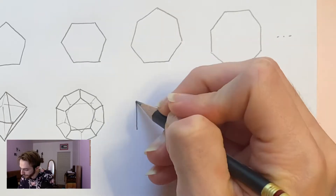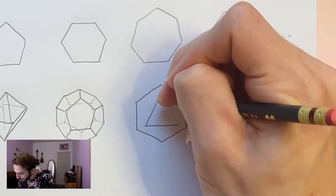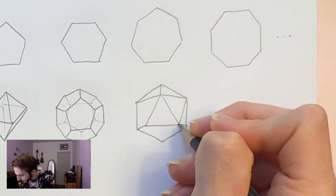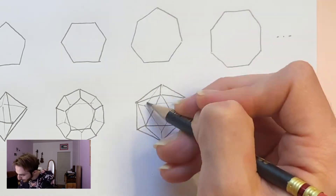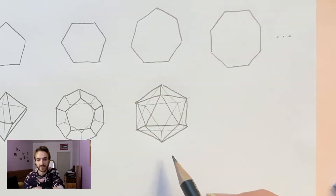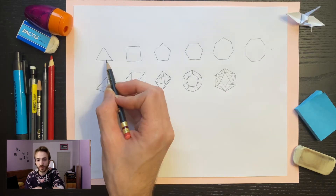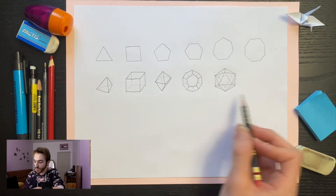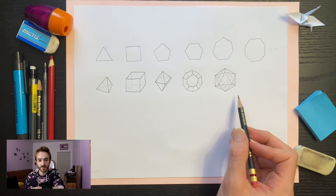There's actually only one more — one last regular polyhedron. It's called the icosahedron, and this one has 20 sides. Once again, they're all perfect triangles. And there's no more. These are the only perfect polyhedra that you can make.